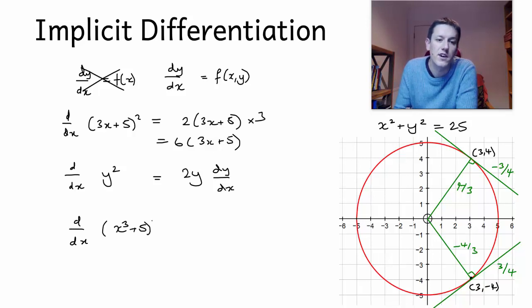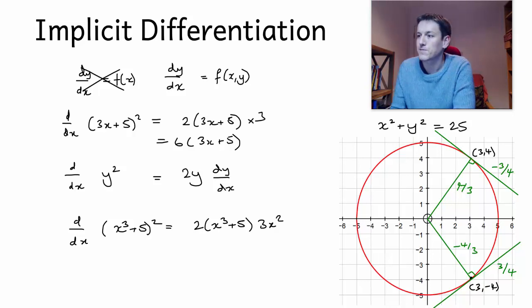So if I have d/dx of (x cubed + 5) squared, I get 2 times (x cubed + 5), that would be my 2y, and I'd multiply by dy/dx. So actually, differentiating things implicitly, formulaically, is relatively easy. If I have something that is a function of y that's related to x, to differentiate it with respect to x, I just write down its derivative with respect to y, and then multiply by dy/dx.